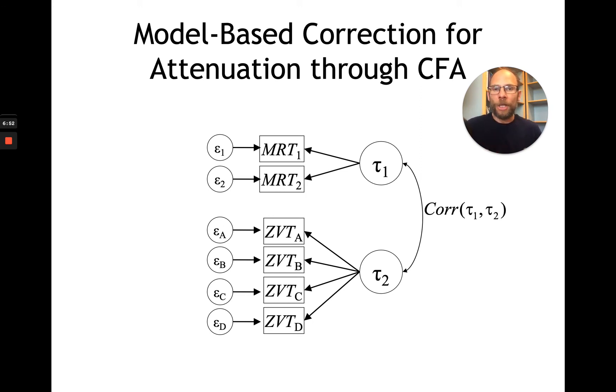So we can also check certain assumptions about the variables, for example, that they are unidimensional or what kind of measurement structure is appropriate here. Are the measures tau equivalent? Are they only congeneric? We can test all these things in a confirmatory factor analysis model. We can also test whether errors of measurement are uncorrelated and so on.